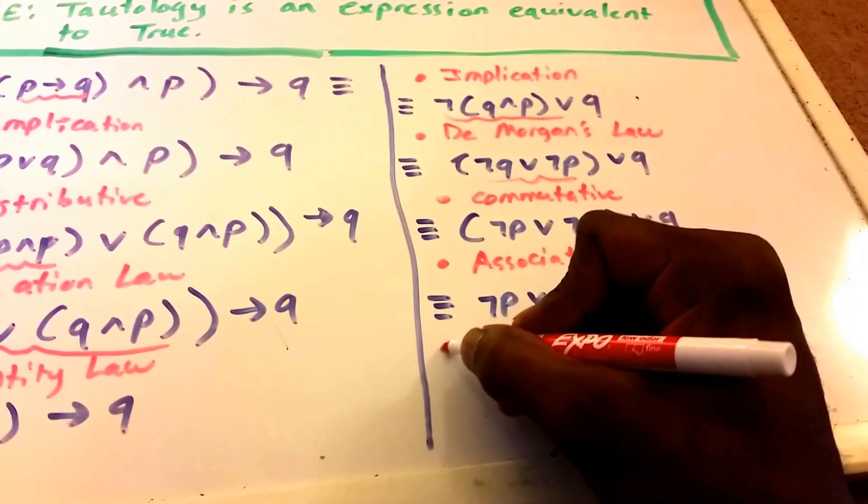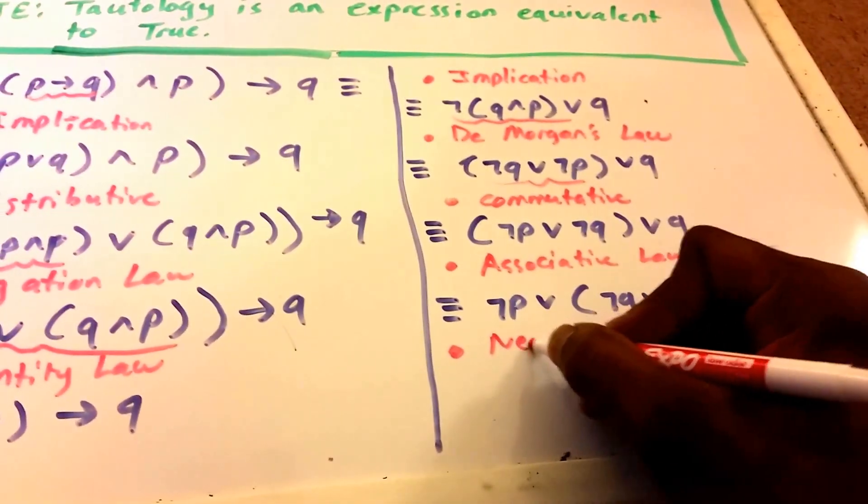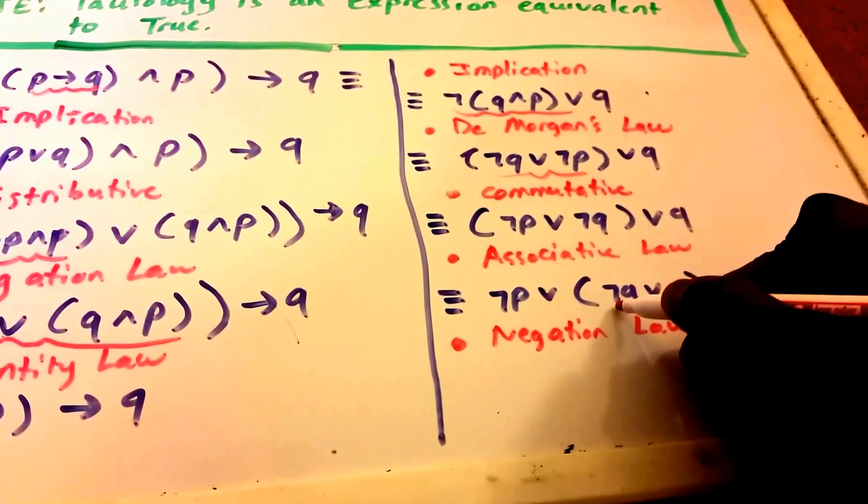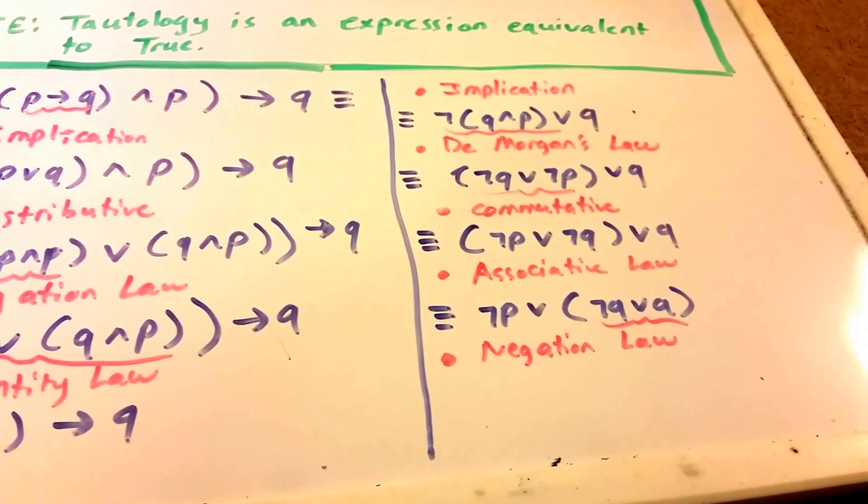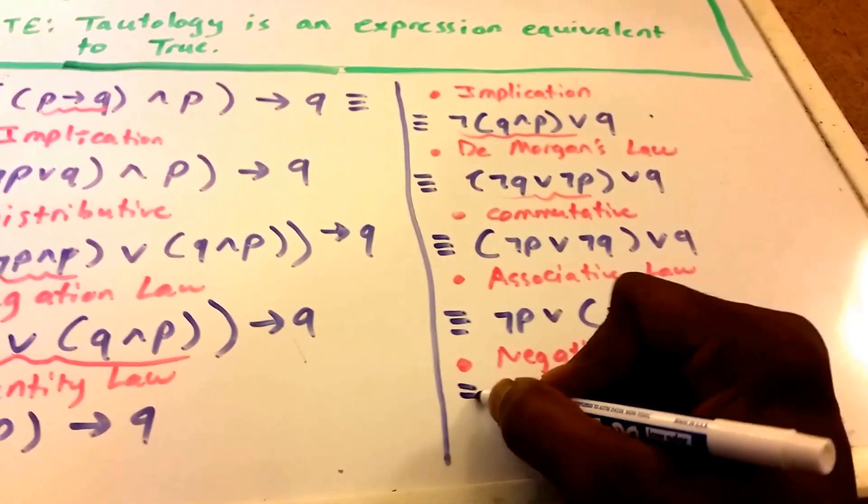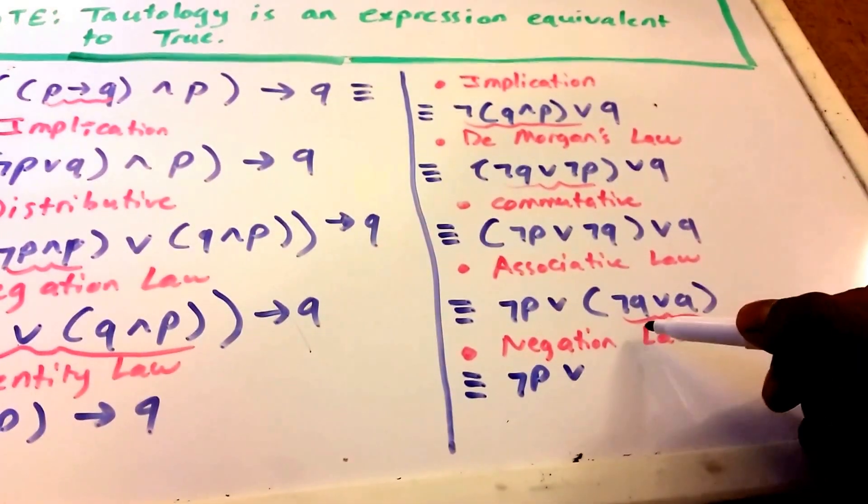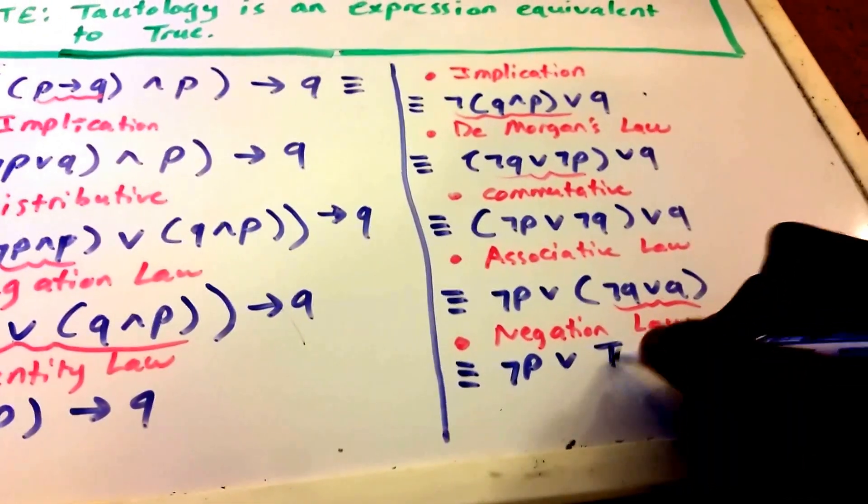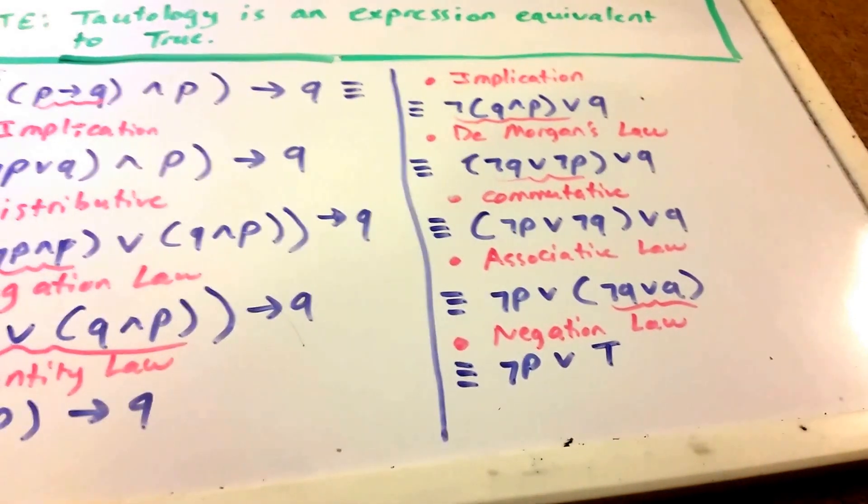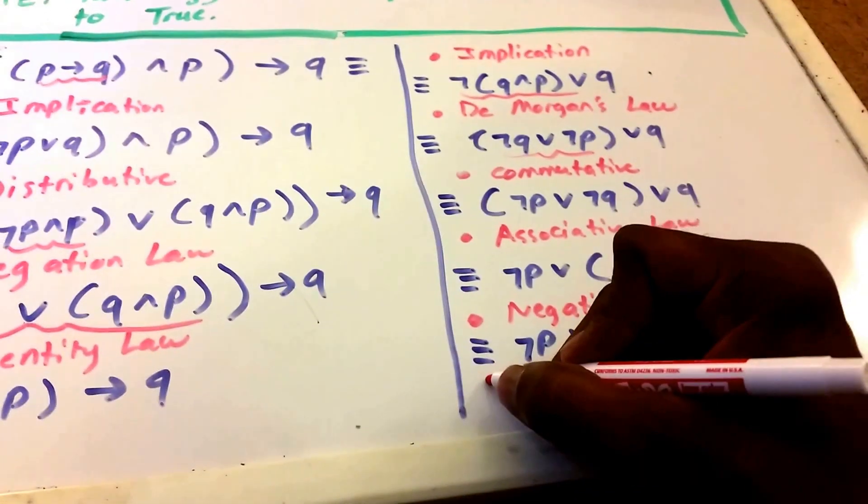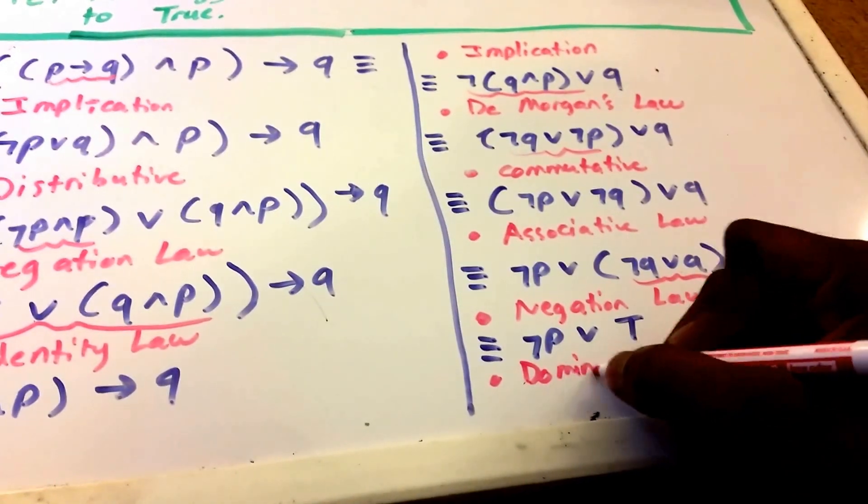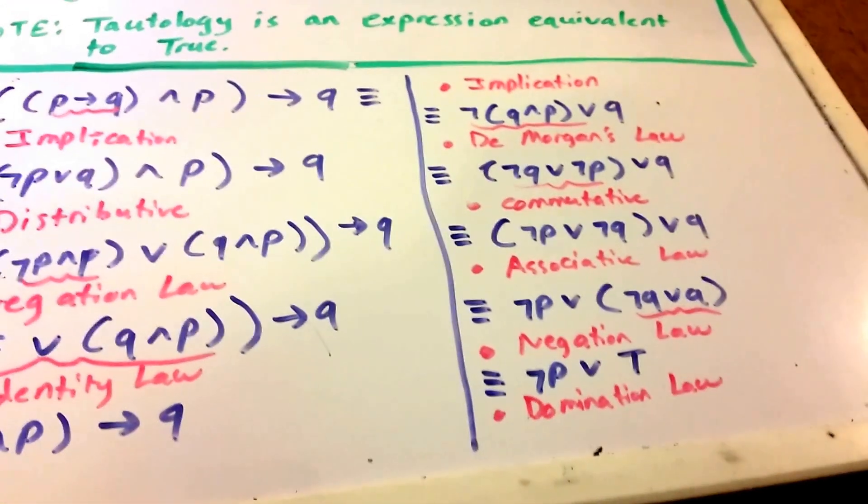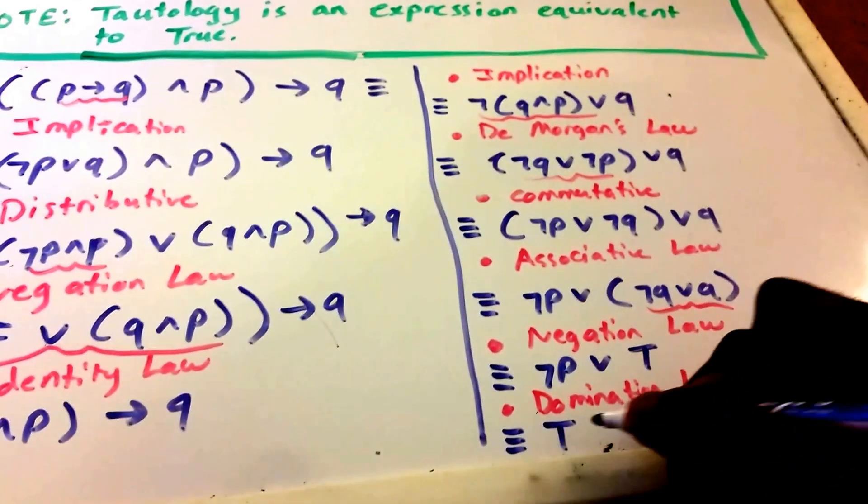So now what we probably want to do is use the negation law for this expression here. And so we get not P or, not Q or not Q would be true. And last but not least, we'll use the domination law. And so now our expression is just true.